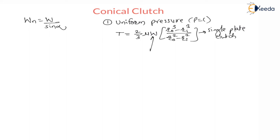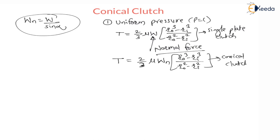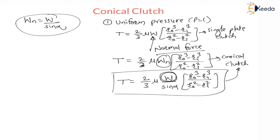Here, W is the normal force only. For torque calculation we have to consider the normal force. Therefore for conical clutch the torque is equal to (2/3) × μ × WN × (Ro³ − Ri³) / (Ro² − Ri²), where WN is the normal reaction. We substitute WN = W / sin alpha, so the torque formula becomes (2/3) × μ × (W / sin alpha) × (Ro³ − Ri³) / (Ro² − Ri²). Here W is the axial reaction in the case of conical clutch.